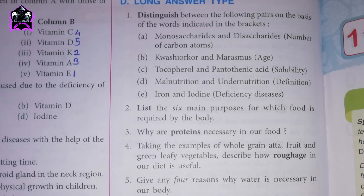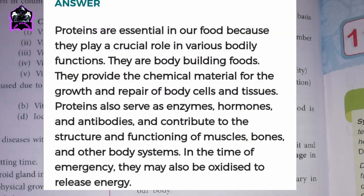Question: why are proteins necessary in our food? Proteins are essential in our food because they play a crucial role in various bodily functions. They are body-building foods; they provide the chemical material for the growth and repair of body cells and tissues. Proteins also serve as enzymes, hormones, and antibodies, and contribute to the structure and functioning of muscles, bones, and other body systems. In times of emergency, they may also be oxidized to release energy.